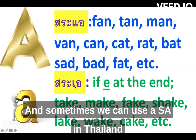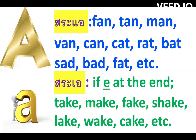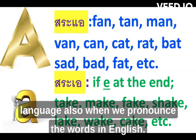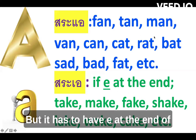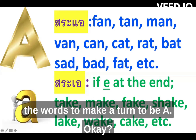Sometimes we use this same 'a' sound in the Thai language too. But when we pronounce words in English, if there is an 'e' at the end of the word, it changes the 'a' to a long 'a' sound.